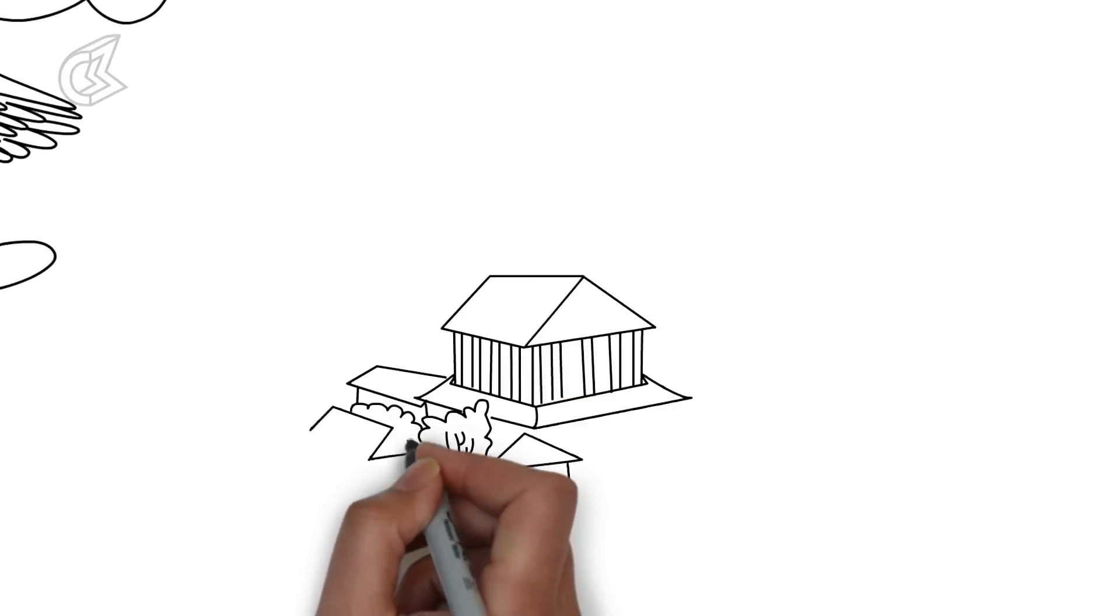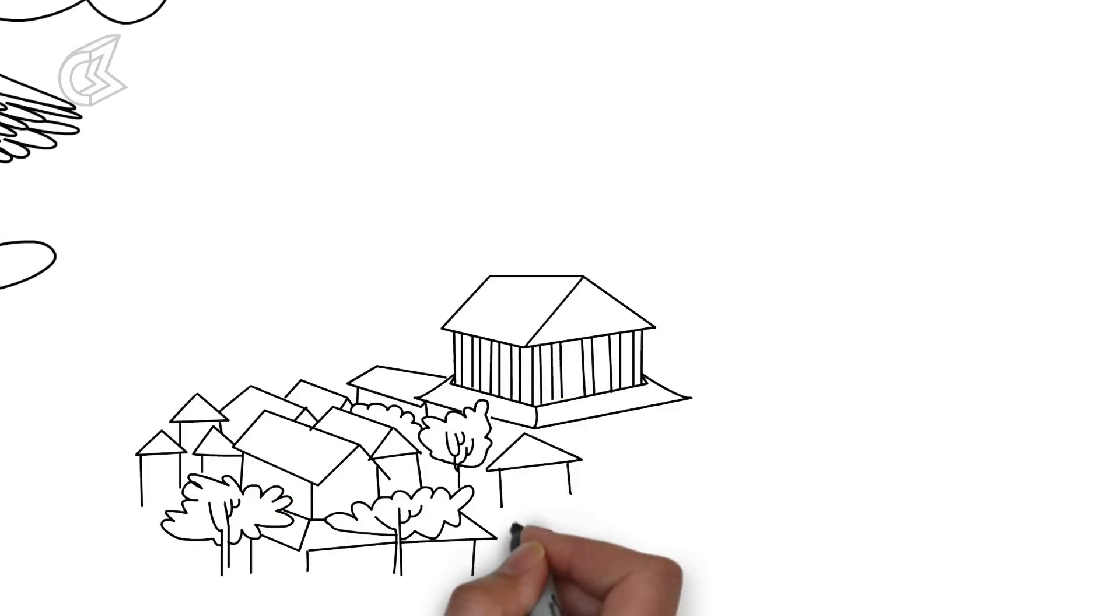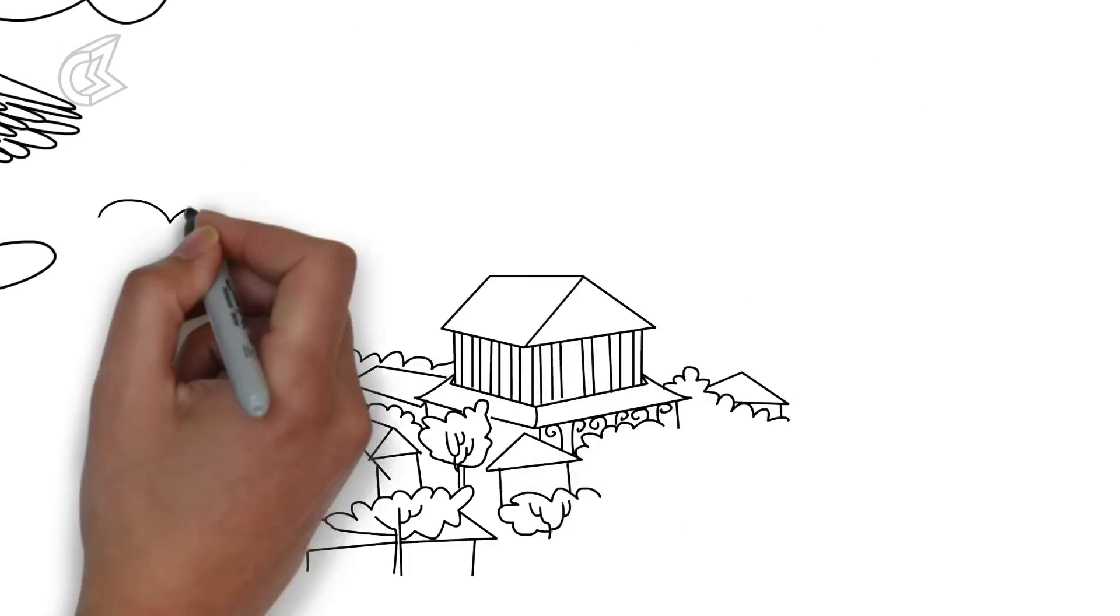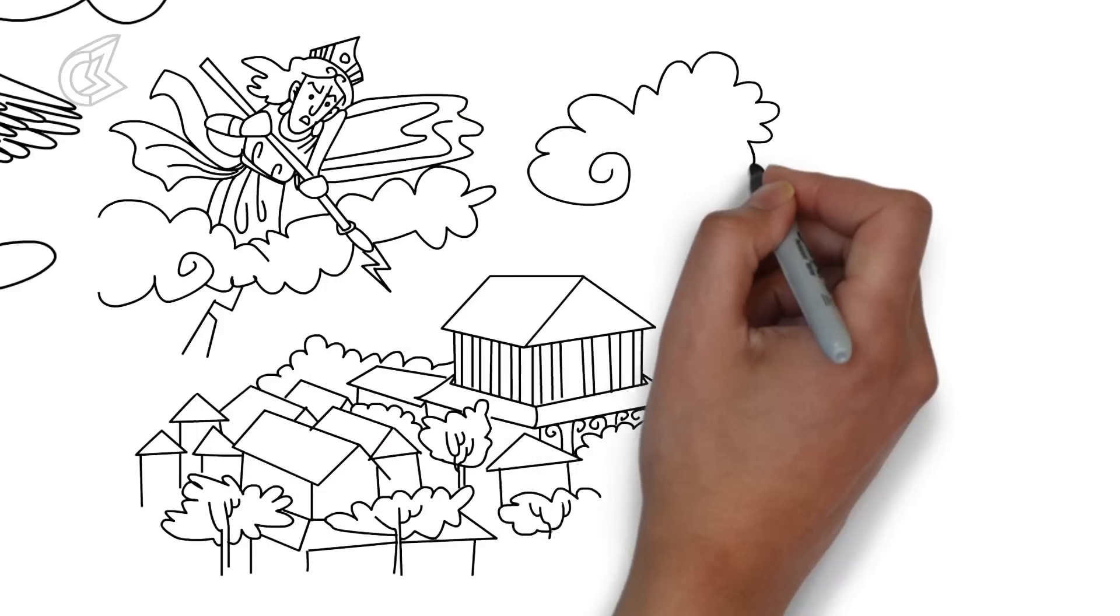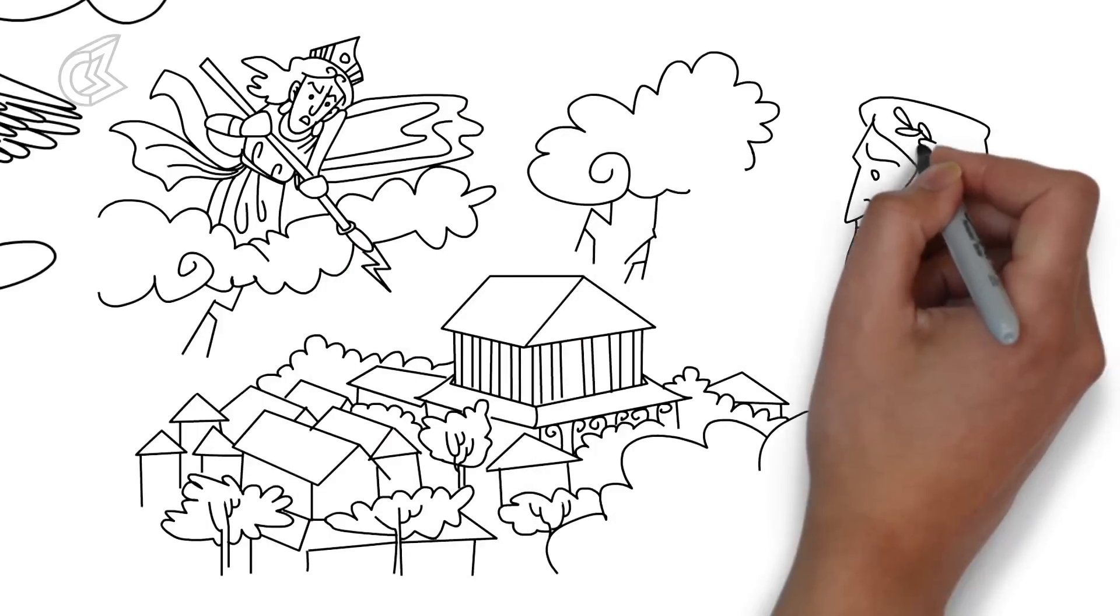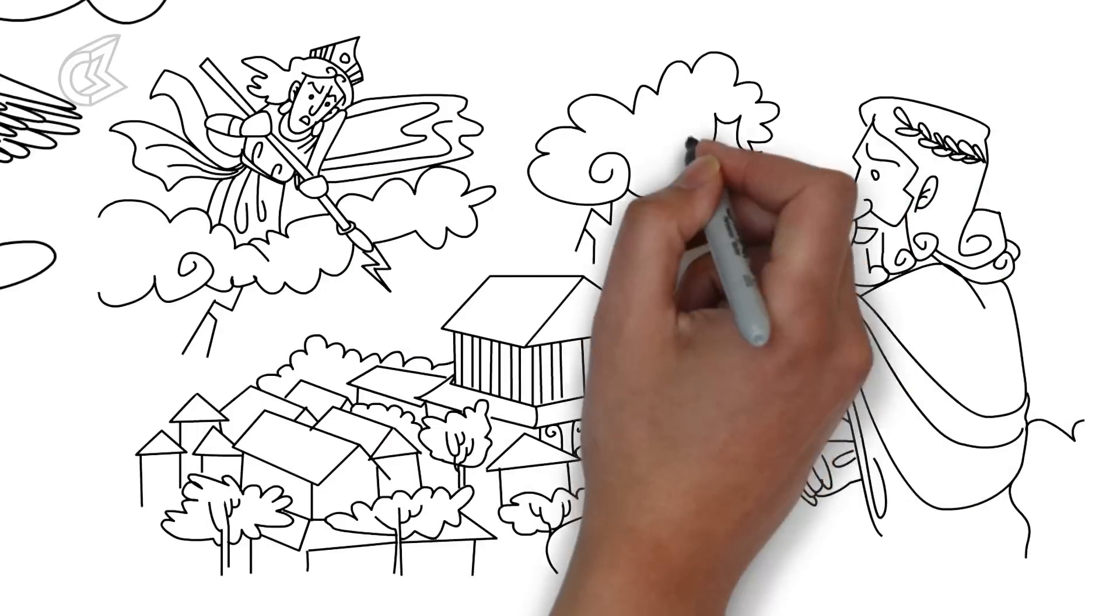Zeus is also said to have turned into an eagle and abducted a woman called Aegina, who became the mother of King Aeacus. Hera later killed all men in Aeacus' kingdom. But Zeus solved the problem by turning all ants in the kingdom into men.